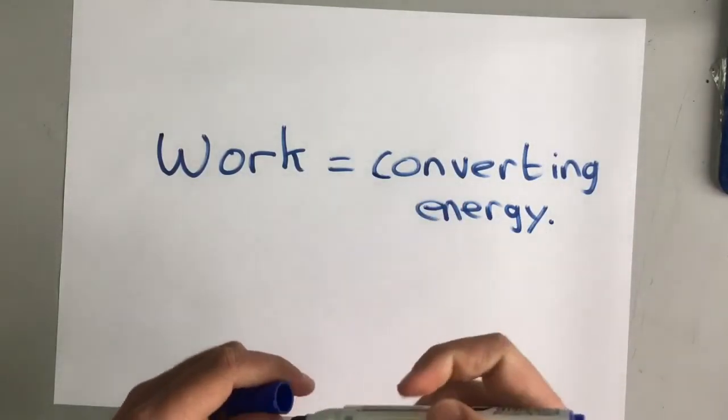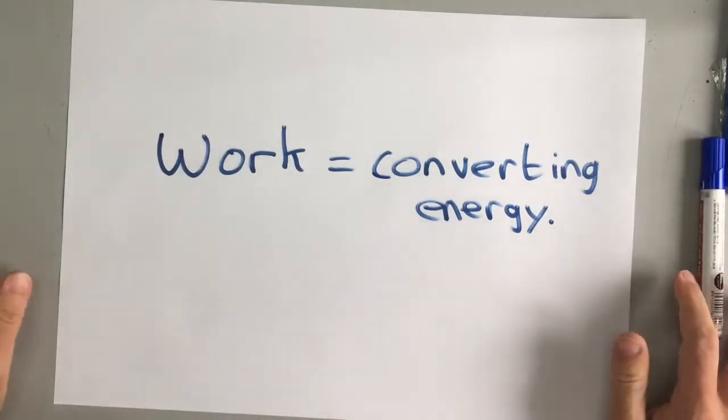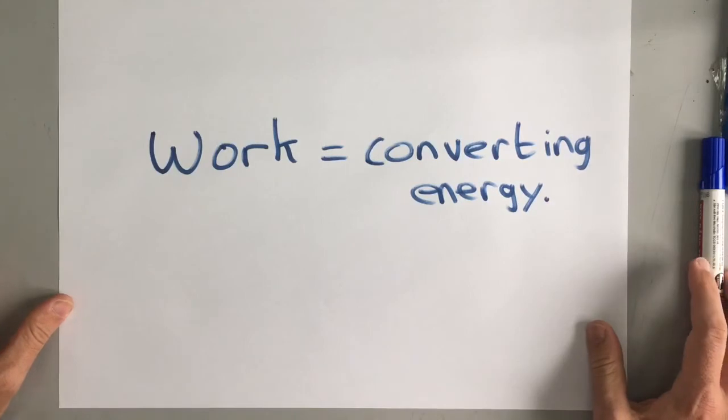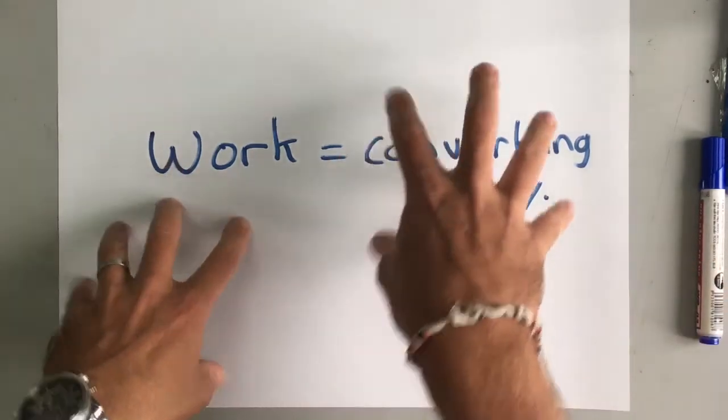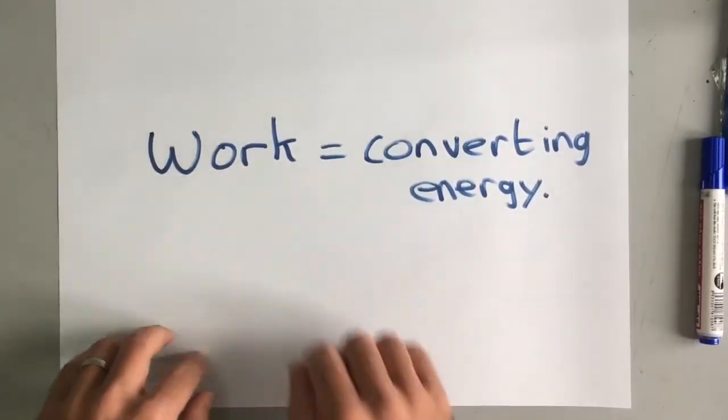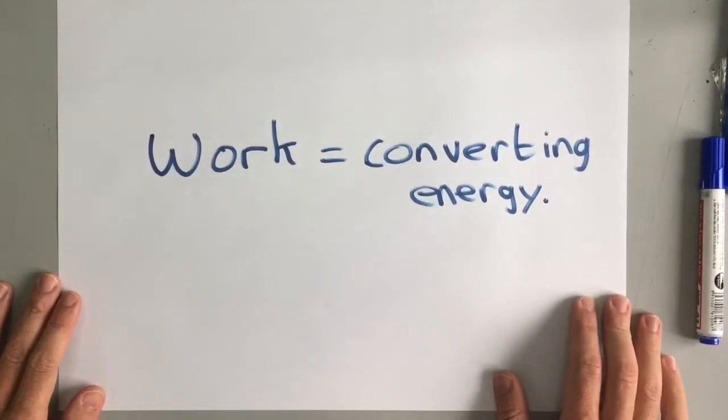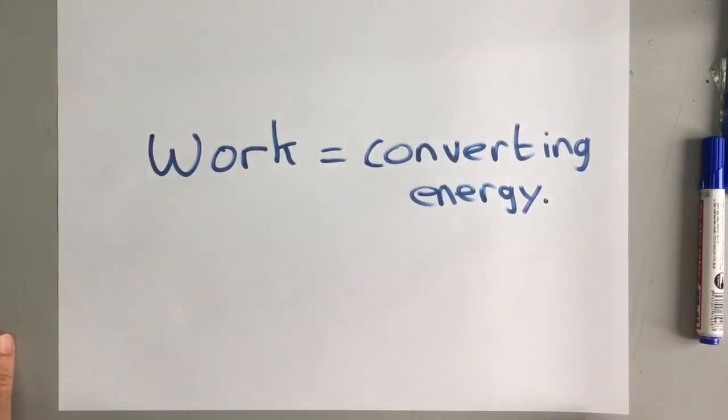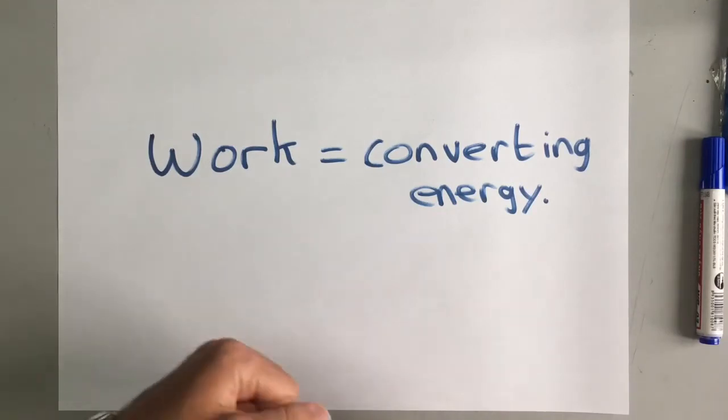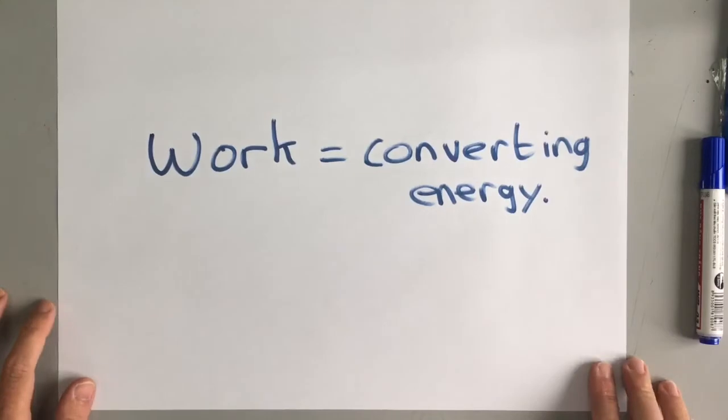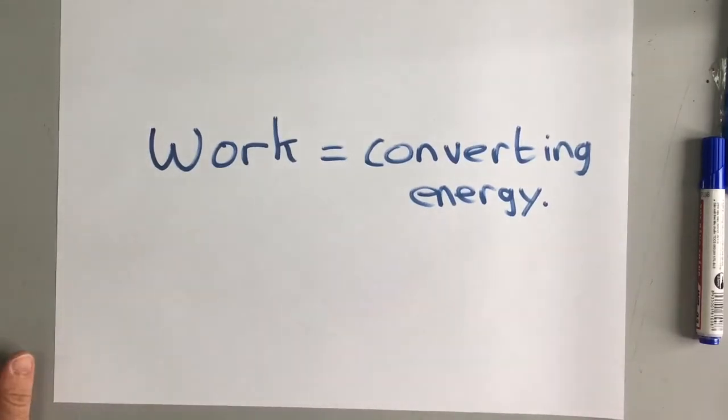So for example, you do work against gravity when you walk up a hill. You convert some of your chemical potential energy into gravitational potential energy. So you're converting energy, so you're doing work. Now the work done in that case is against gravity. You're also doing work against friction. So your chemical energy is going into the friction of your feet on the ground and that is heating up your shoes slightly. So you're doing work against friction.